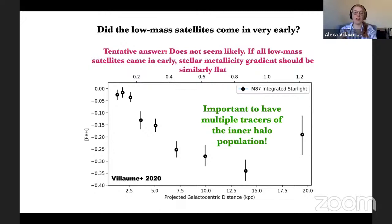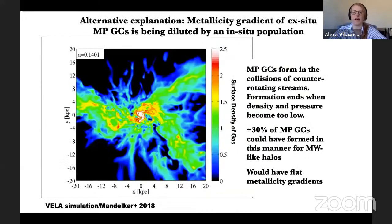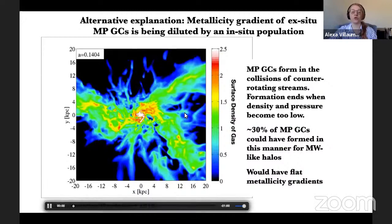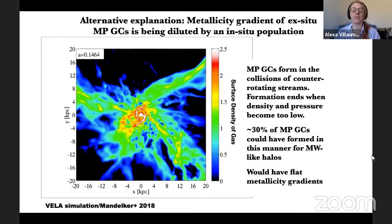It's really important to have multiple tracers in the inner halo — they help interpret one another. There's a lot going on in these inner halo regions, and we need all the information we can get. An alternative explanation for the flat metal-poor GC metallicity gradient is that it's being diluted by an in-situ population. I'm still assuming bimodality when fitting the statistical model, but there was a recent formation scenario proposed that forms metal-poor GCs directly in the halos of massive galaxies at high redshift from accreting cold gas streams.